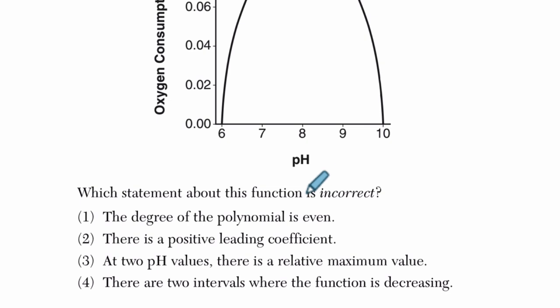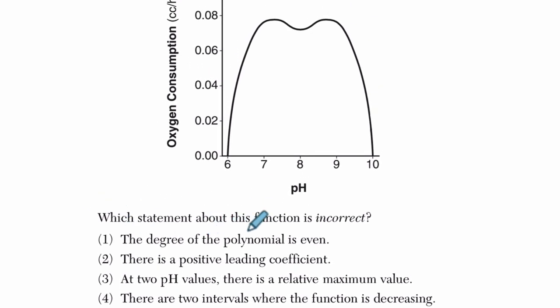Which statement about this function is incorrect? The first one says the degree of the polynomial is even. Now remember, if the degree of your polynomial is even, that means the end behavior is either going to be like a positive parabola. So I'm going to draw a parabola. It's going to be one of these two things. If you remember parabolas, which are even polynomials, the end behavior here means x gets really big. So it's this end and this end right here.